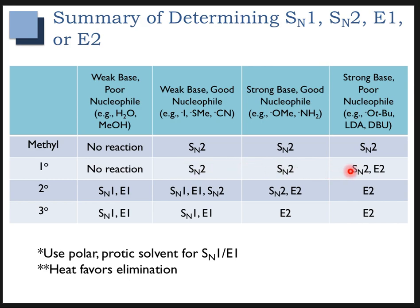In the situation where you have a primary substrate and something that's a strong base but a poor nucleophile because it's too bulky, you might start to see some E2. A little bit of heat would give you more E2, whereas running the reaction a bit colder might give you a little more of the SN2 product.